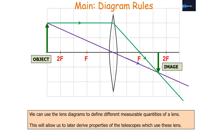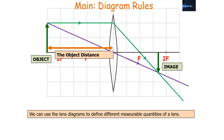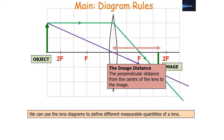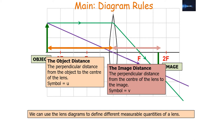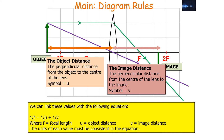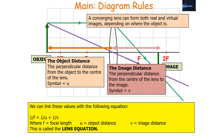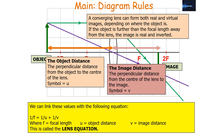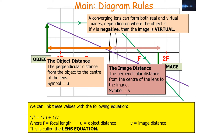Lens diagrams allow us to calculate measurable quantities. The object distance U is the perpendicular distance from the object to the centre of the lens, and the image distance V is the perpendicular distance from the centre of the lens to the image. These are linked by the lens equation: 1/f = 1/u + 1/v, where f is the focal length. This equation is given in your examination booklet. If V is positive the image is real; if V is negative the image is virtual.